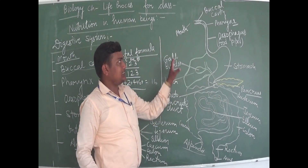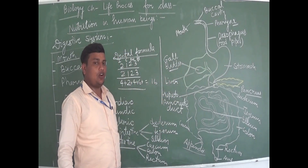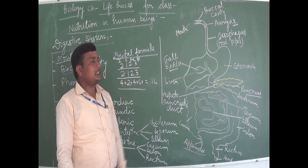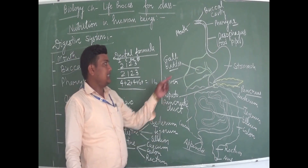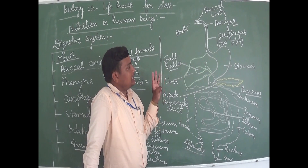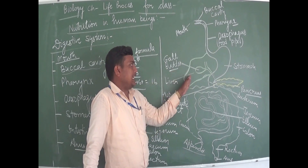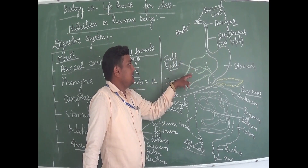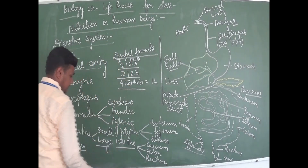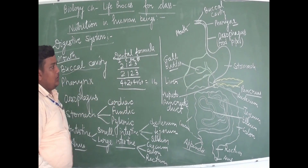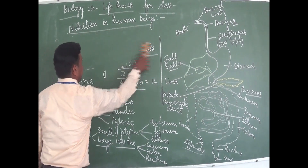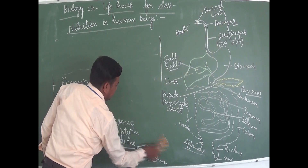Overall, this is the structure of the alimentary canal along with associated glands. There are three glands: the salivary gland in the buccal cavity, the liver, and the pancreas. These three glands are connected to the alimentary canal. Now let's look at the associated glands which help in digestion and the enzymes they secrete.